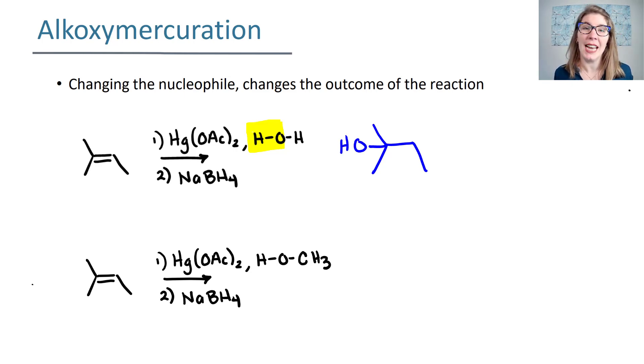But what if we didn't add water as our nucleophile? What if we had something different? If we have something different, like an alcohol, what will happen is the O and the R group will add across the pi bond. So instead of having an H here adding across the pi bond, what will happen is we'll have the CH3 adding where we used to have an H. So this is called an alkoxymercuration because the alkoxy group is the O-R group.